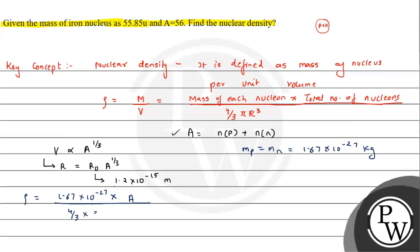Into pi value, we will add 3.14, into R we will substitute R0 A raised to 1 by 3. So here just R0 cube into A. Because the cube root is already A, A will get cancelled out.